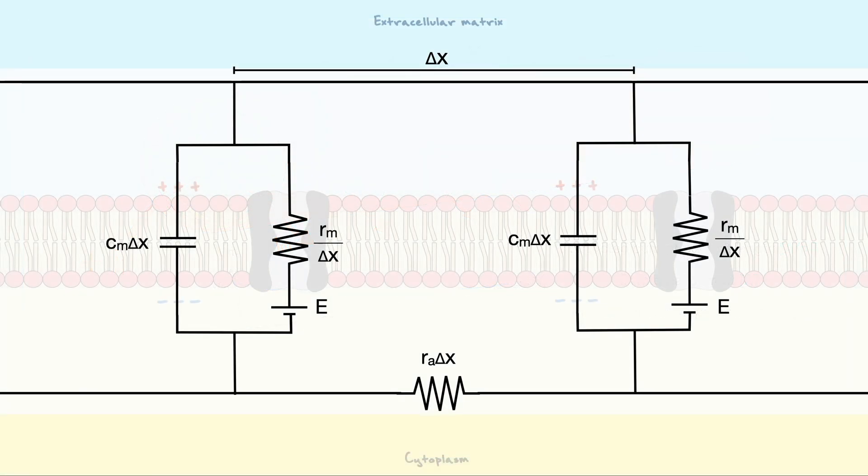Back to our electric circuit, to make it less convoluted, let's just analyze one junction. One junction will be sufficient to derive the cable equation, but keep in mind that this pattern is repeated many many times.